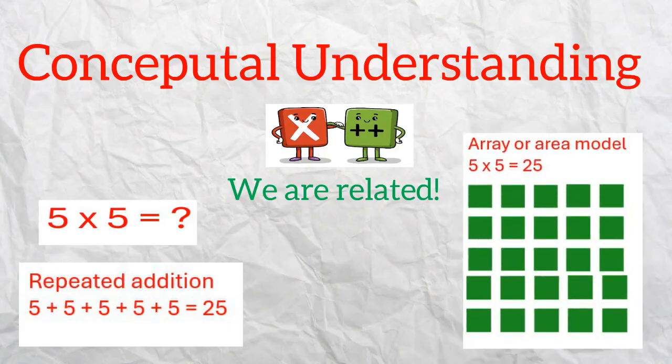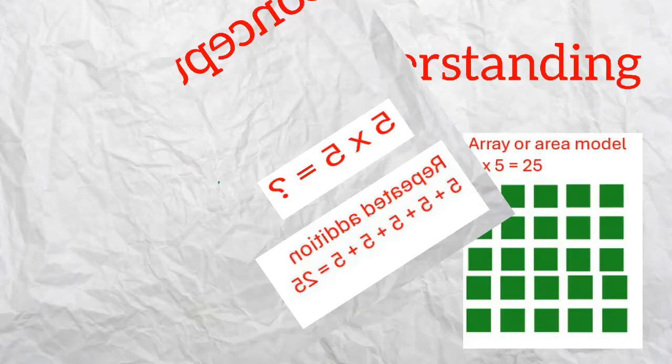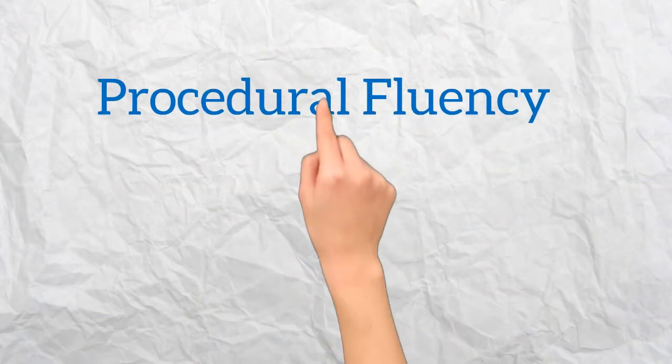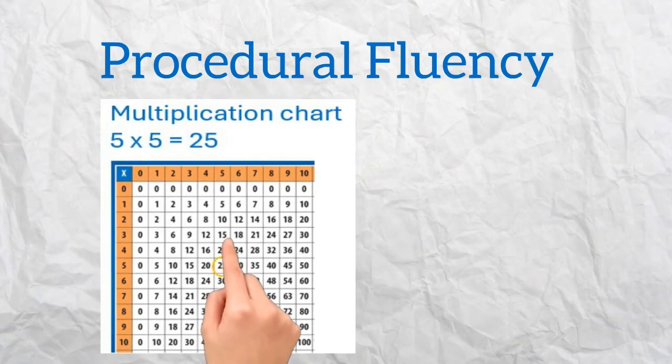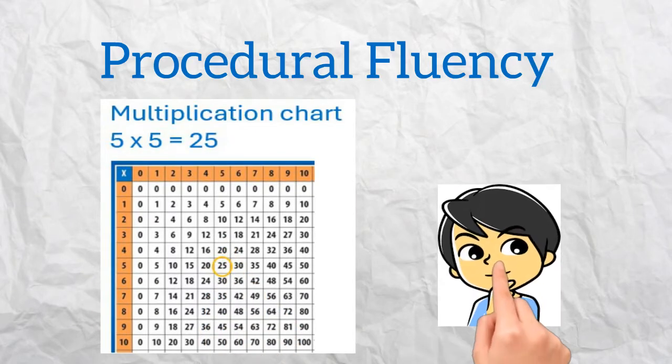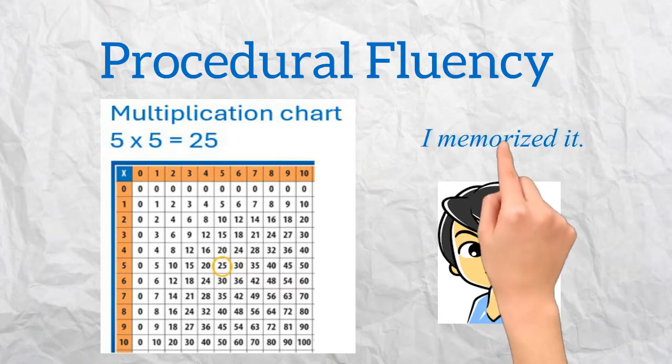I could also use an array or area model to figure out the solution for 5 times 5. An example of procedural fluency within multiplication occurs when I memorize my multiplication facts. I know that 5 times 5 is 25 because I memorized it. That is procedural fluency.